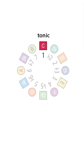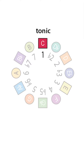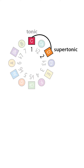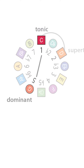Tonic refers to the keynote or the first scale degree. It's another name for interval one, which is the tonal center of the key — it's the tonic or tonal center. Supertonic refers to scale degree two. In Latin, super means above, and interval two is a whole step above the tonic. So it's the supertonic.